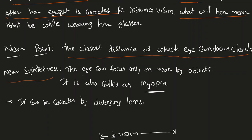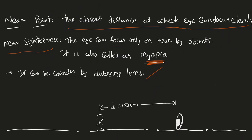Near-sightedness means the eye can focus only on nearby objects. It is also called myopia. It can be corrected by a diverging lens — so near-sightedness we can correct by using a diverging lens.